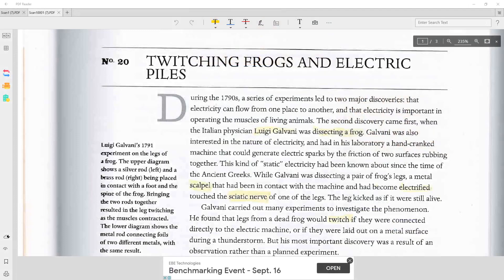Twitching Frogs and Electric Piles. During the 1790s, a series of experiments led to two major discoveries – that electricity can flow from one place to another, and that electricity is important in operating the muscles of living animals. The second discovery came first, when the Italian physician Luigi Galvani was dissecting a frog.